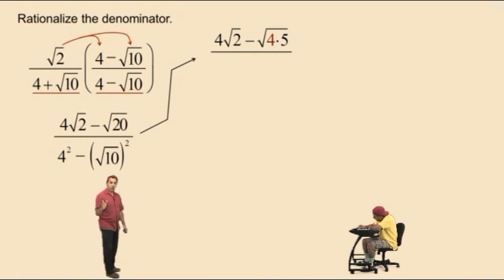Remember, square root of 4 is 2. Now, in the denominator, we'll go ahead and square our quantities. Charlie, what's 4 squared? 16. That's right. And now, what's square root of 10 squared? 10. Very nice there, Charlie.